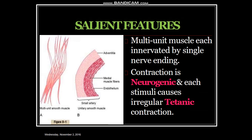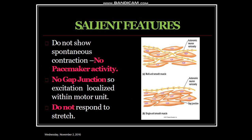Features of multi-unit smooth muscle: it is generated by a single nerve ending. Contraction is neurogenic and each stimulus causes irregular tetanic contractions. Looking at the vessel structure — the adventitia, the medial muscle fibers, and the endothelium cells — this is a small artery with multi-unit smooth muscle. Salient features: no spontaneous contraction, no pacemaker activity. No gap junctions, meaning action potentials cannot transfer from fiber to fiber. Excitation is localized within the motor unit; does not respond to stretch.